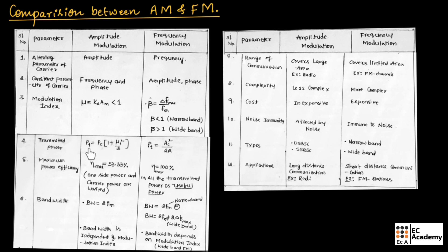The transmitted power of an AM signal is given as Pt equal to Pc times 1 plus mu squared divided by 2. In frequency modulation, the transmitted power is given as Pt equal to Ac squared divided by 2R.